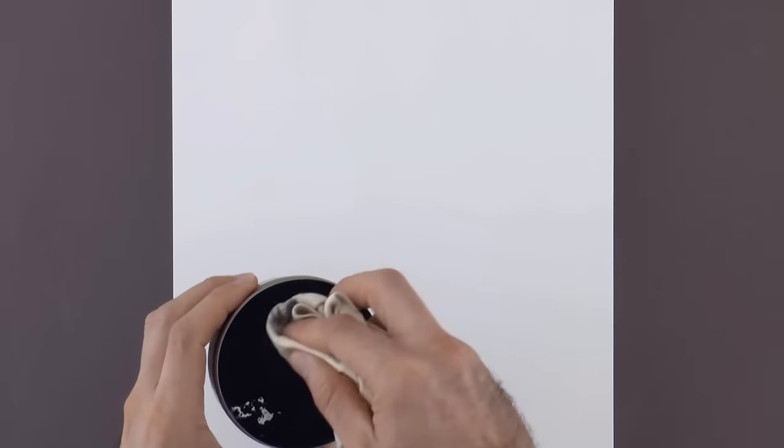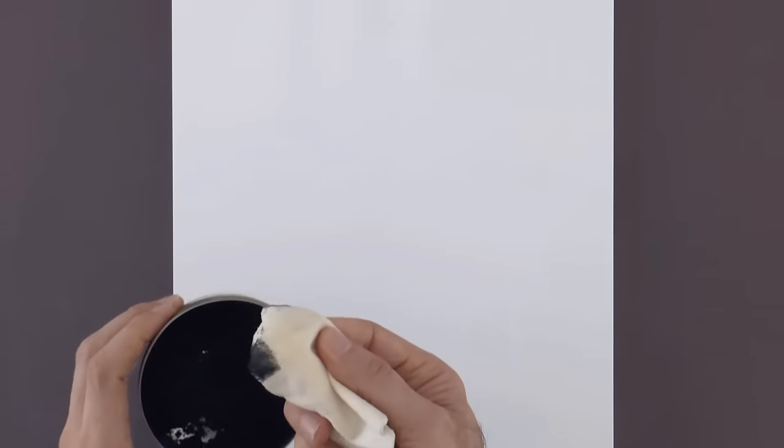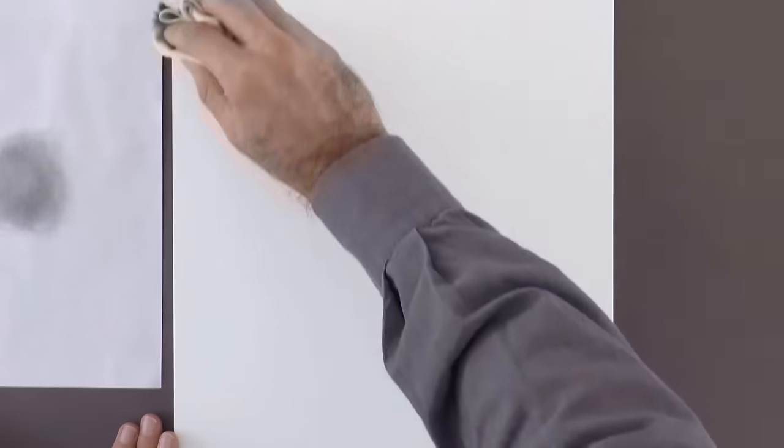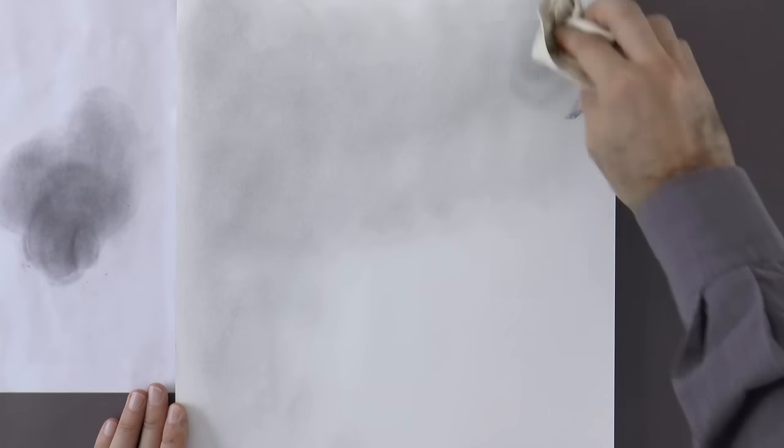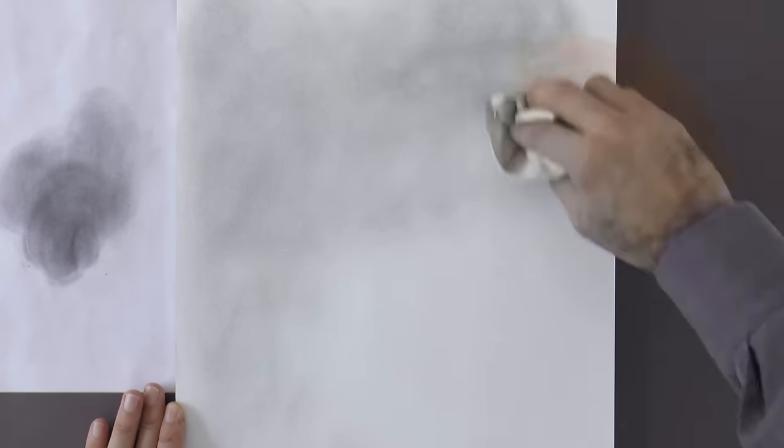The first thing we do is to give a tone to the paper using the graphite powder that I keep when sharpening my pencils. First we test it on a scrap piece of paper before we use it on the good one, also to get rid of the excess graphite. I'm applying it with a chamois and in this way we give a tone to the paper.